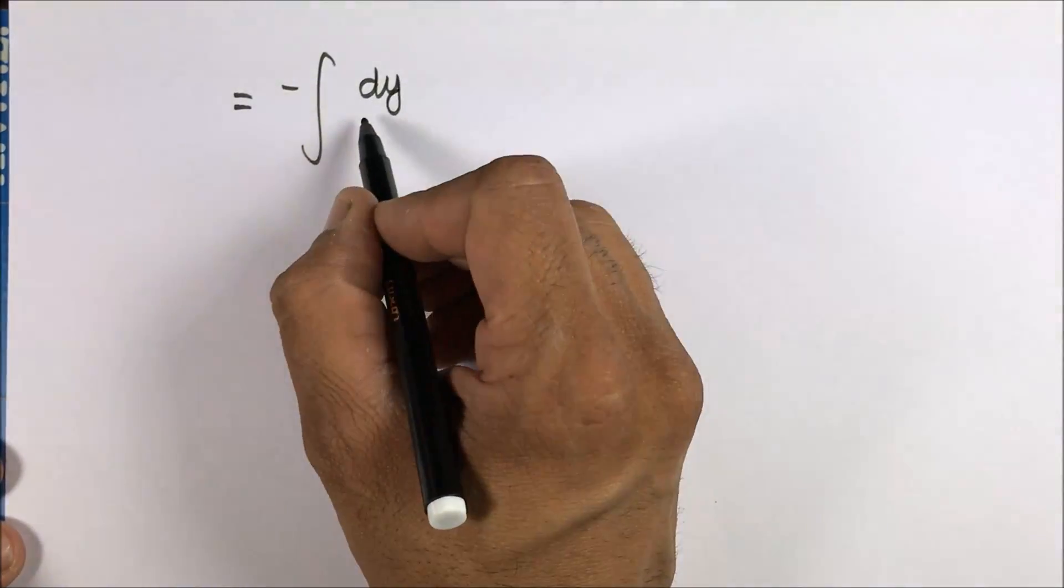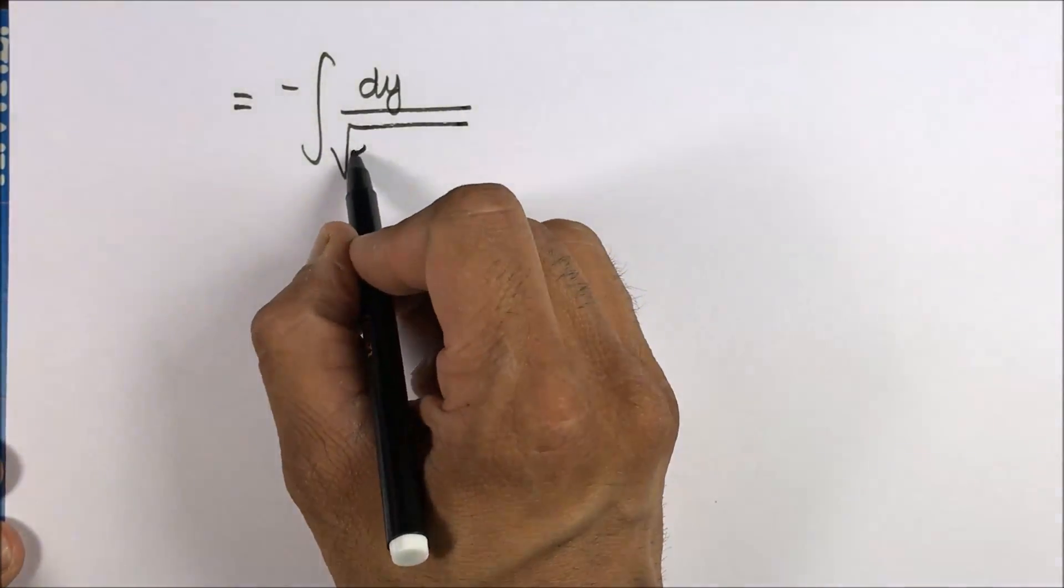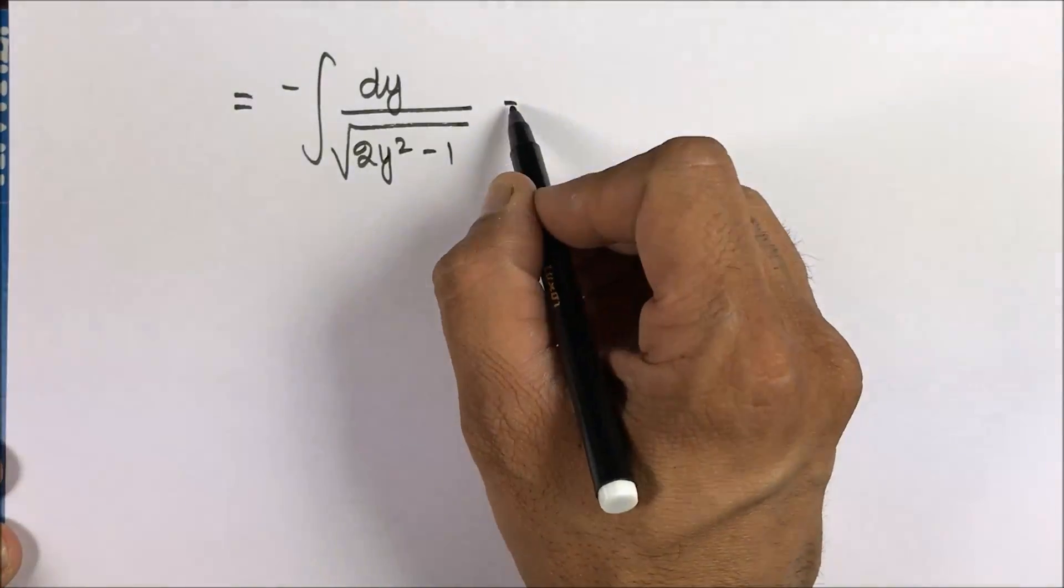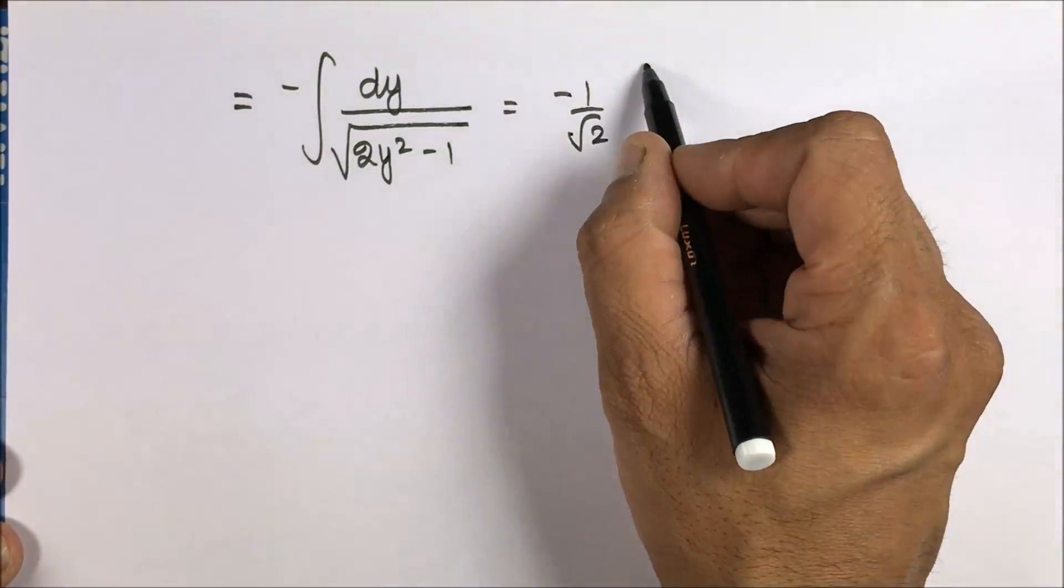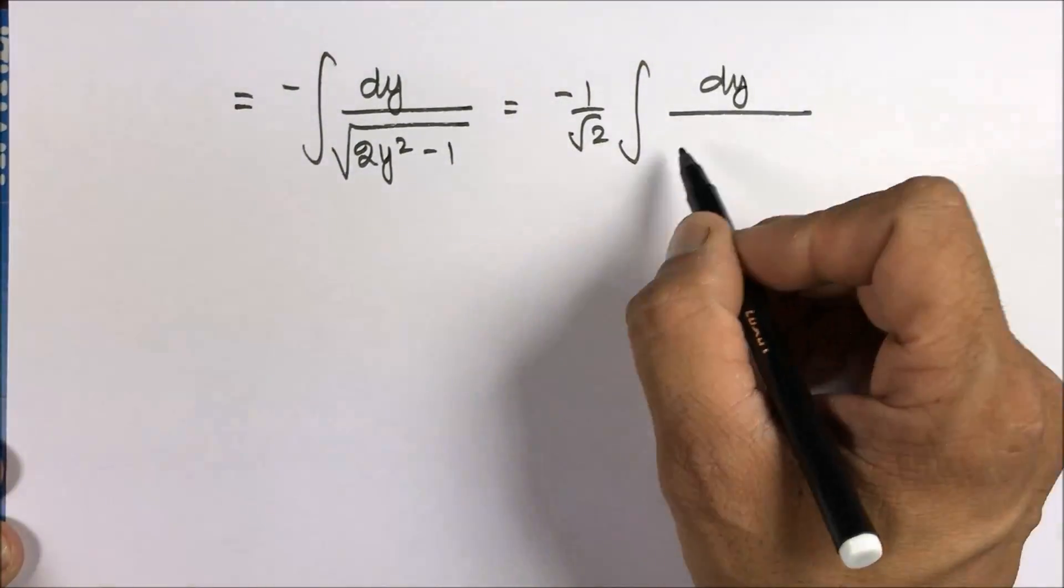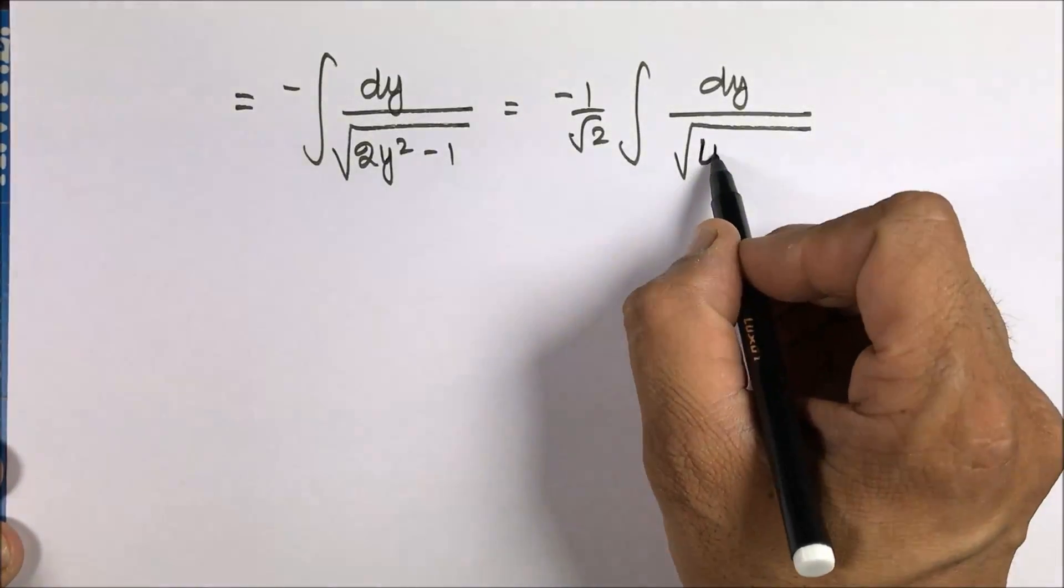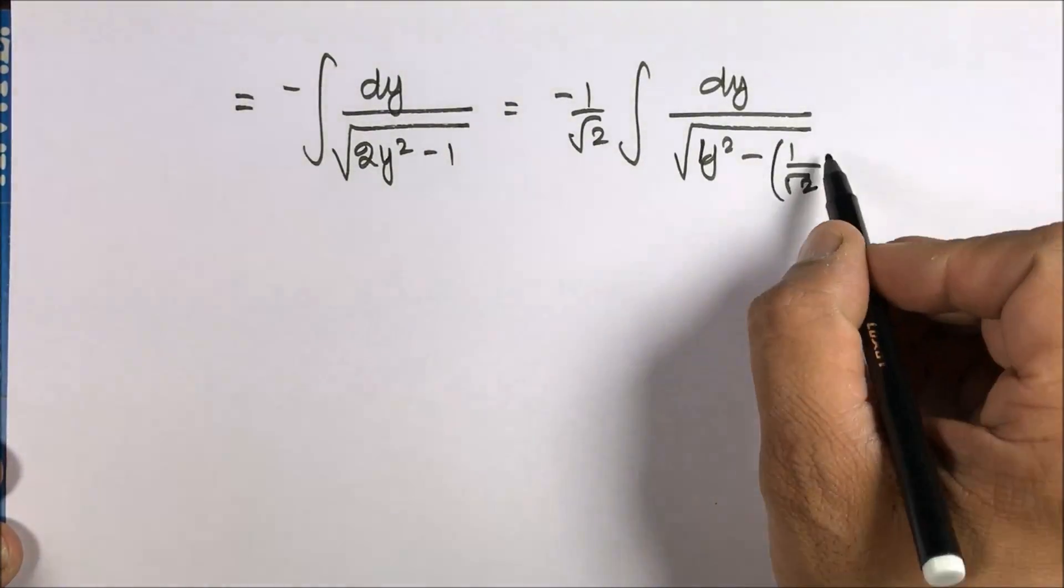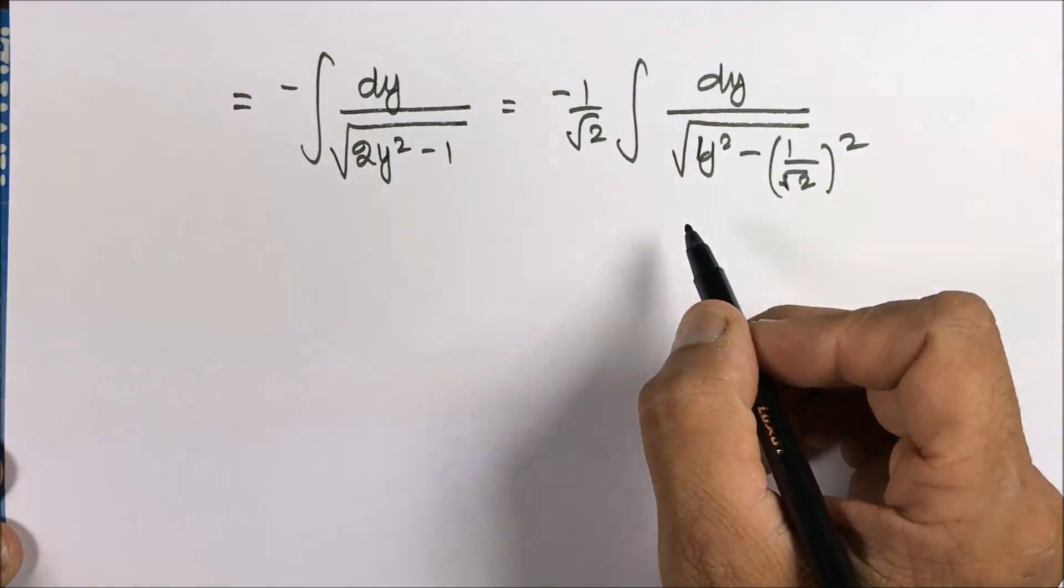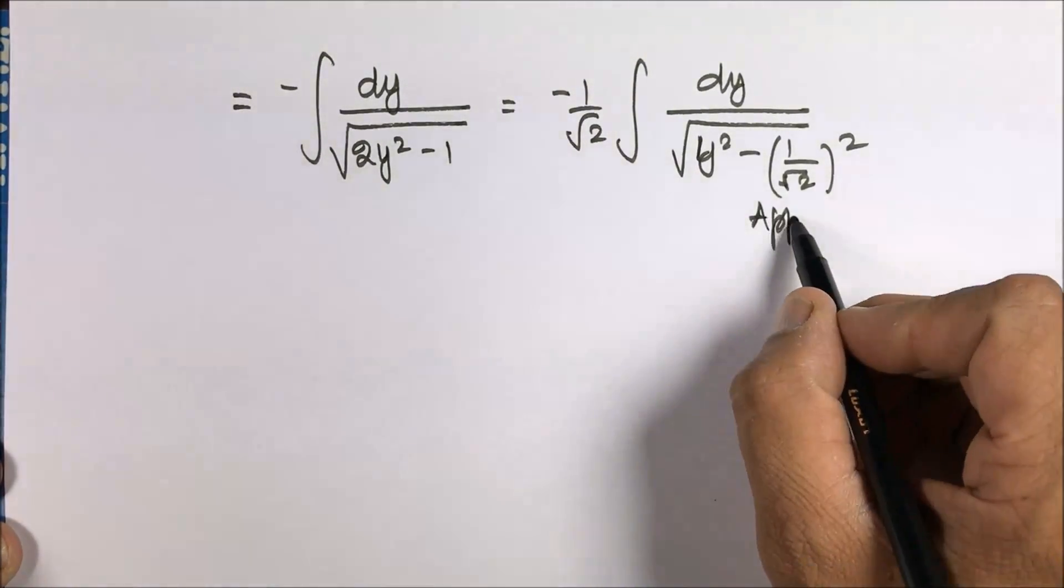And this is minus sin x dx equals dy. So that is minus dy upon under root of 2y square minus 1. It's good to take root 2 common so that we can apply the special integration. So applying special integration...